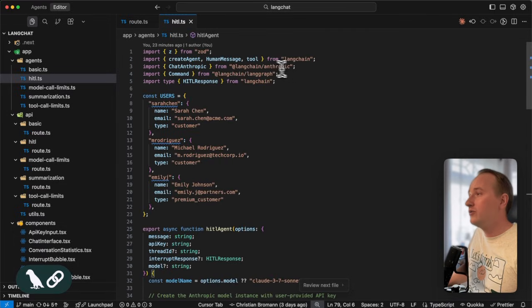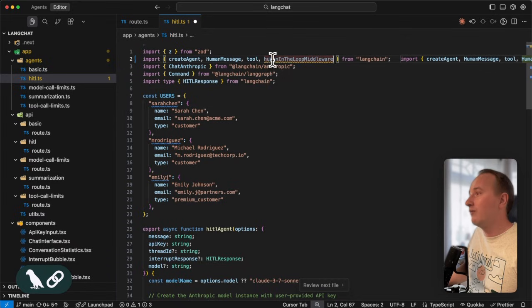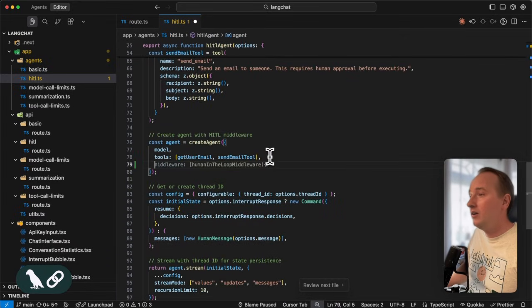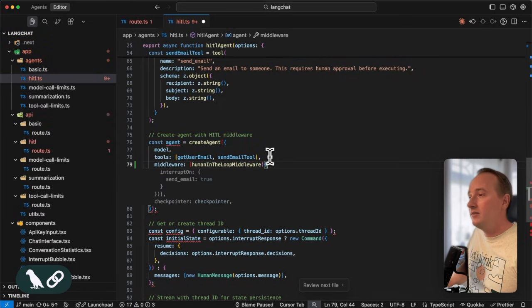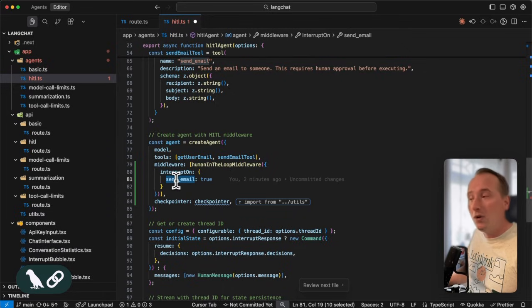In order to do that, we have to import the human in the loop middleware from the LangChain package. Then in our create agent call, we define a middleware function in our middleware property and in that middleware function, we say every time the action is about to call the send email tool, we interrupt and allow the user to revise and accept, edit or reject the tool call.